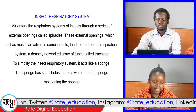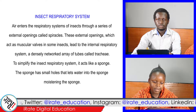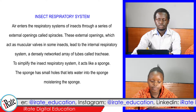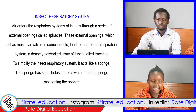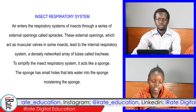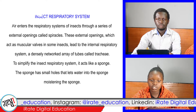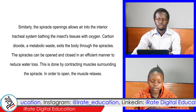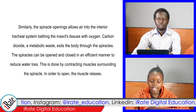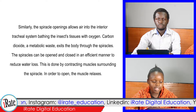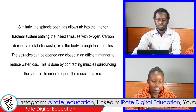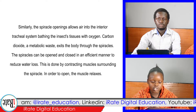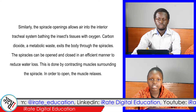To simplify the insect respiratory system, it acts like a sponge. The sponge has small holes and lets water into the sponge, moistening it. Similarly, the spiracle openings allow air into the interior tracheal system, bathing the insect's tissues with oxygen.